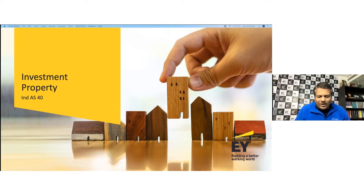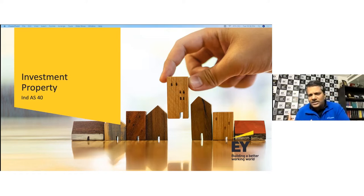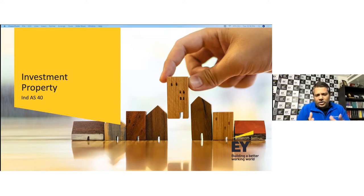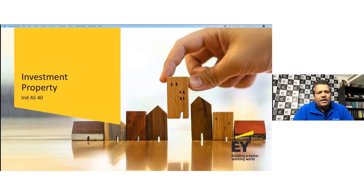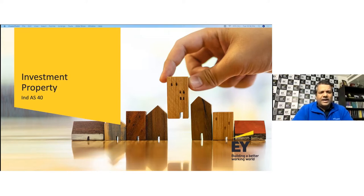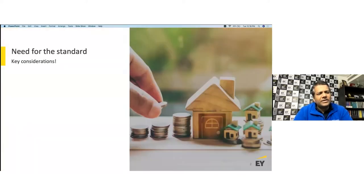You can only do accounting on a cost basis, but you must make disclosures of fair value. That's where you need to get the concepts right: what type of assets get classified under Ind AS 16 as property, plant and equipment, what gets classified under Ind AS 40 as investment property, what accounting policy choices exist, and how they impact your profit and loss account or balance sheet.